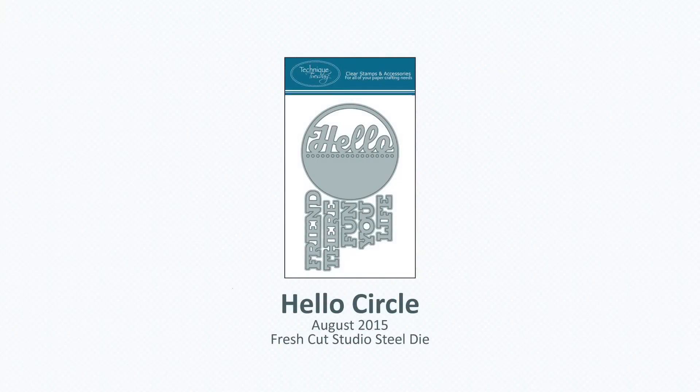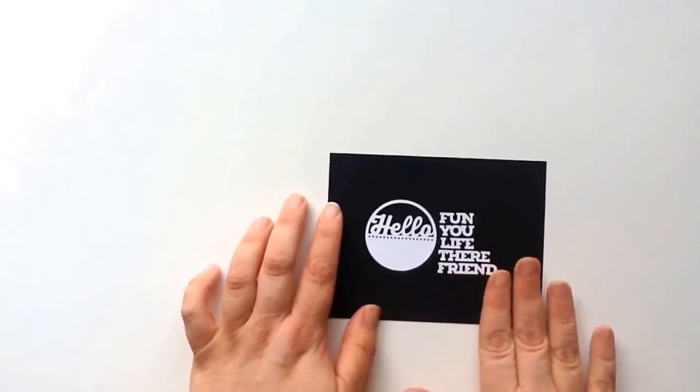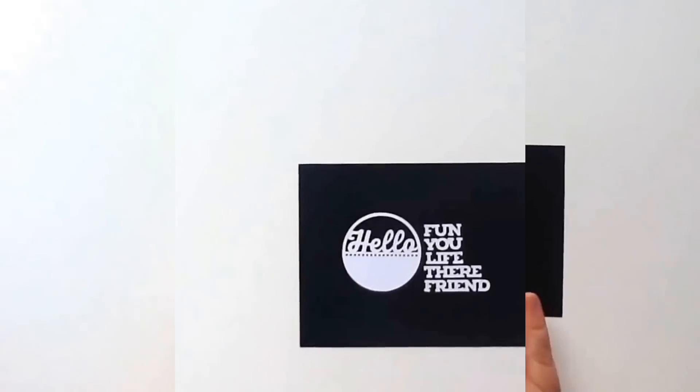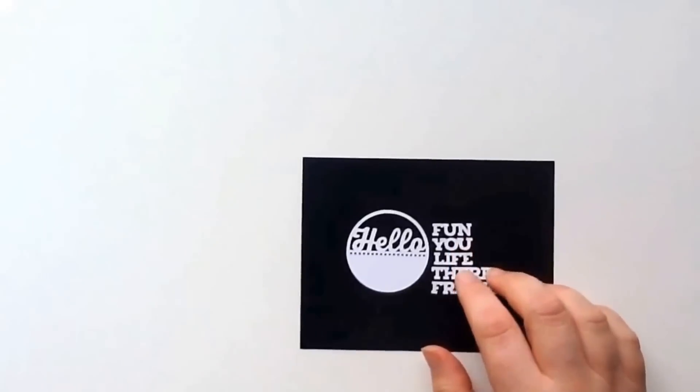Finally, Technique Tuesday also has the new Hello Circle steel dies. These dies consist of six dies: a large circle as well as five words – fun, you, life, there, and friend. And for the fun of it, I cut them out and put them onto this piece of paper so you could see what they look like when they're all cut out. Also, you can use that circle on its own or you can pair it with the words in that die set.